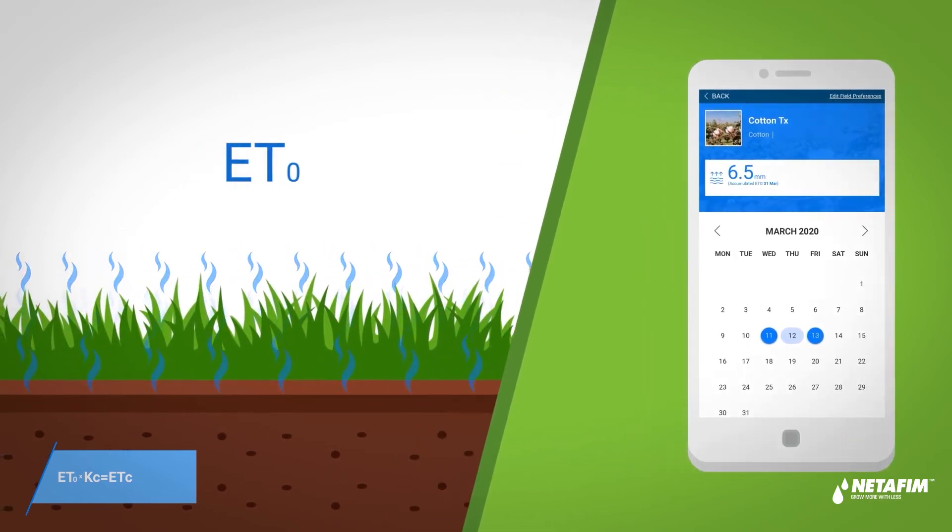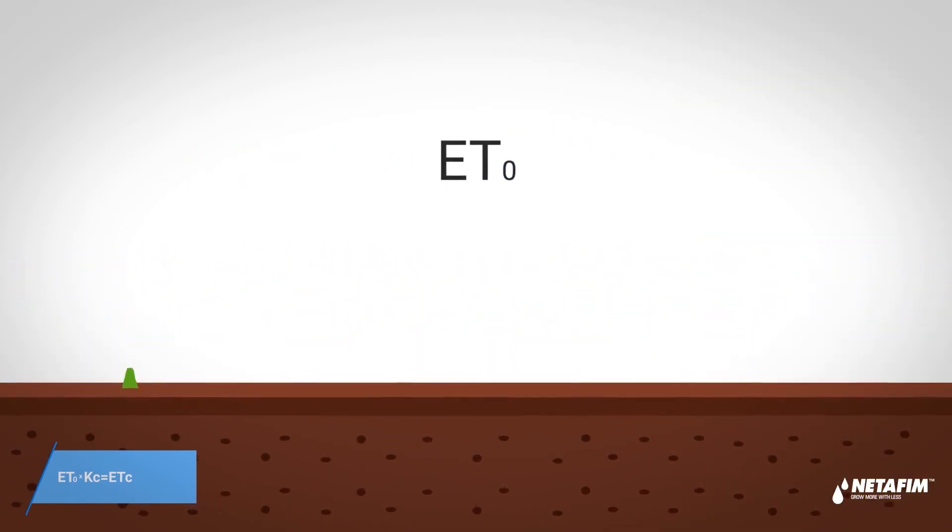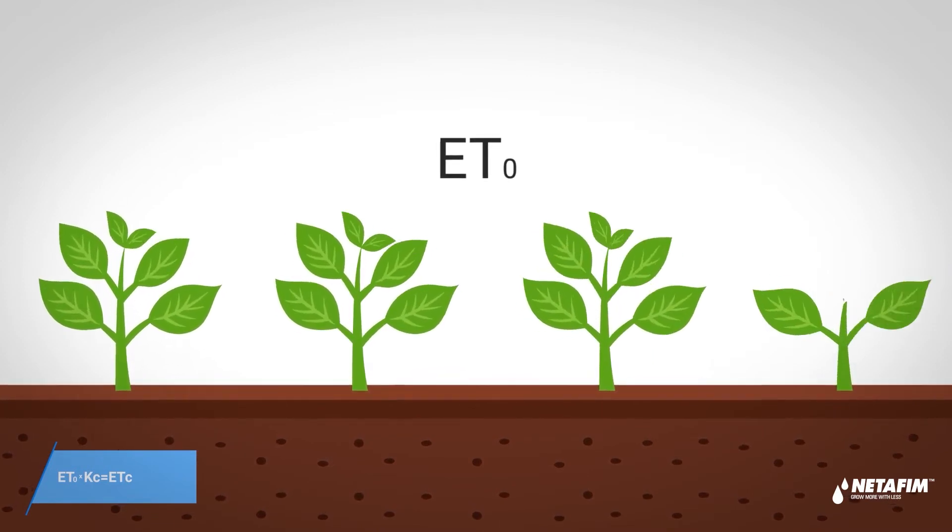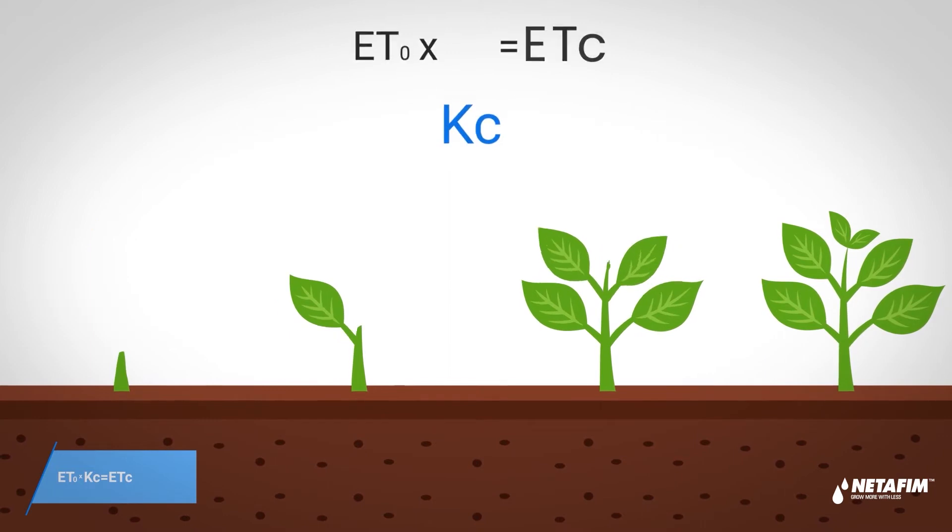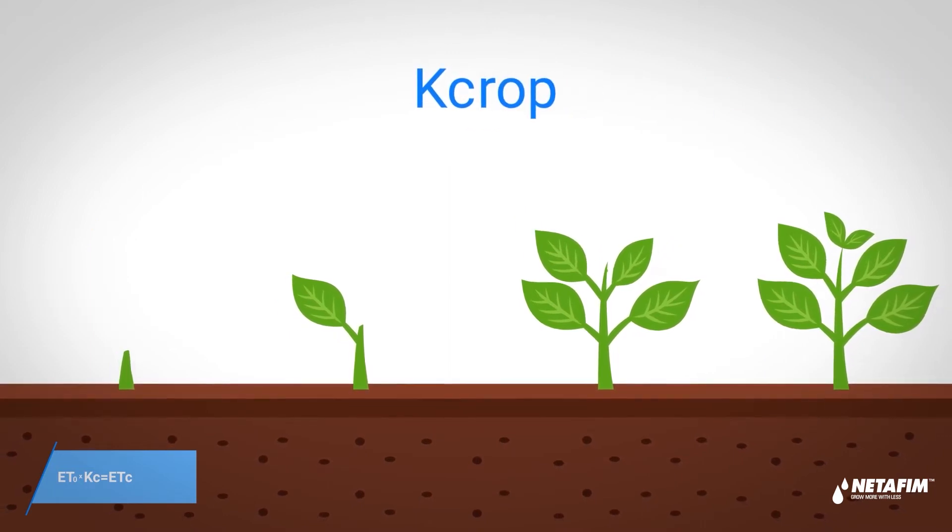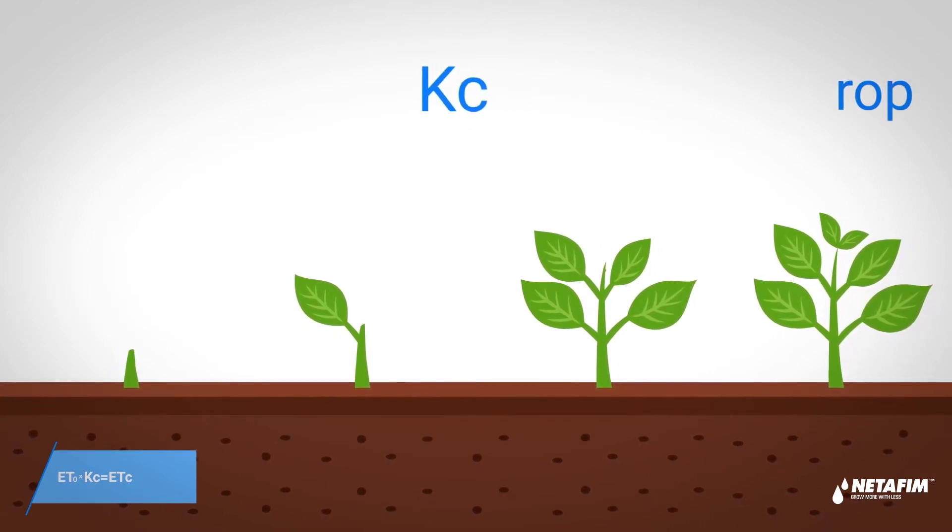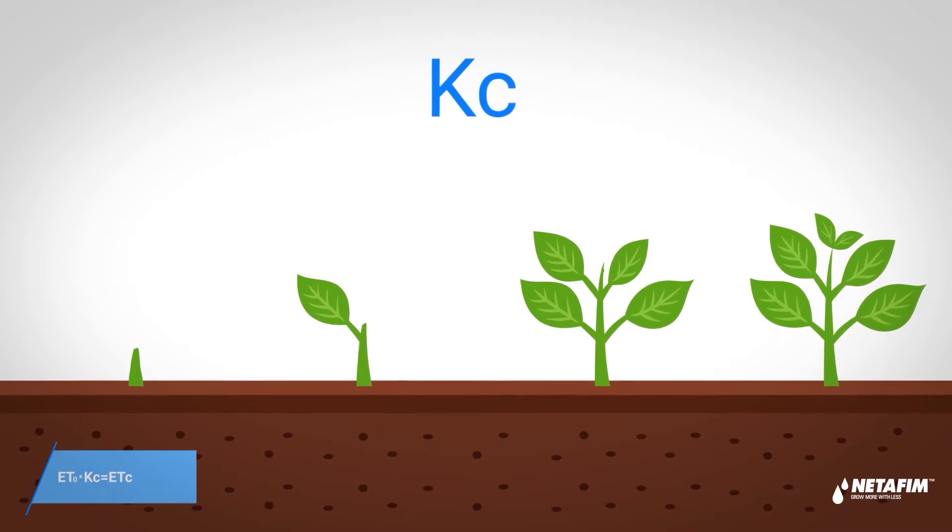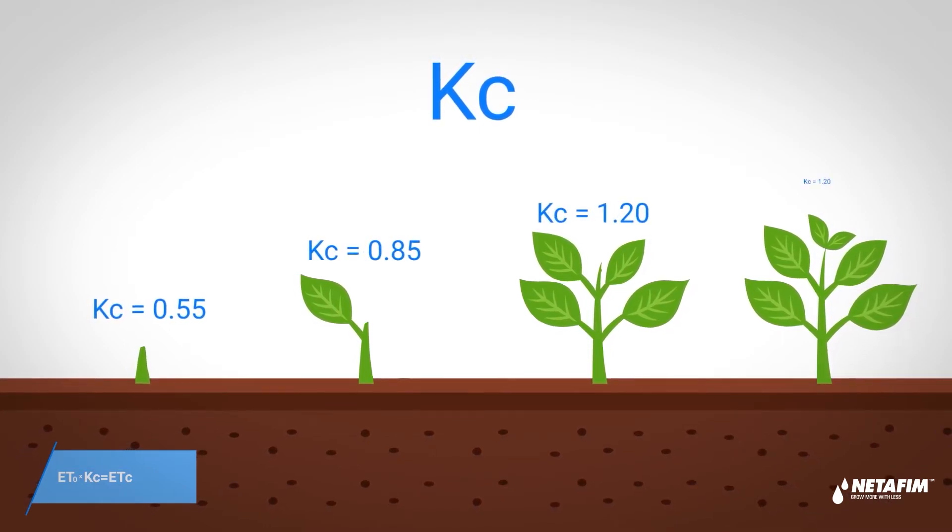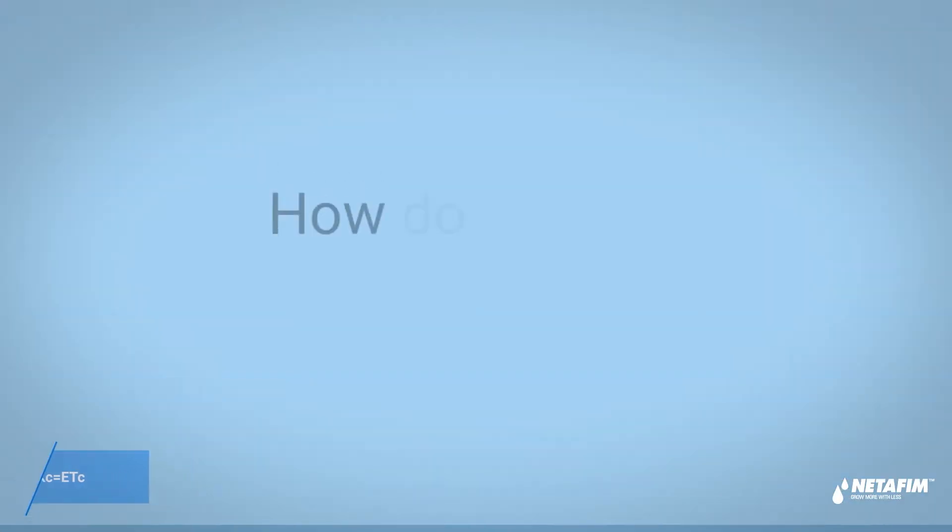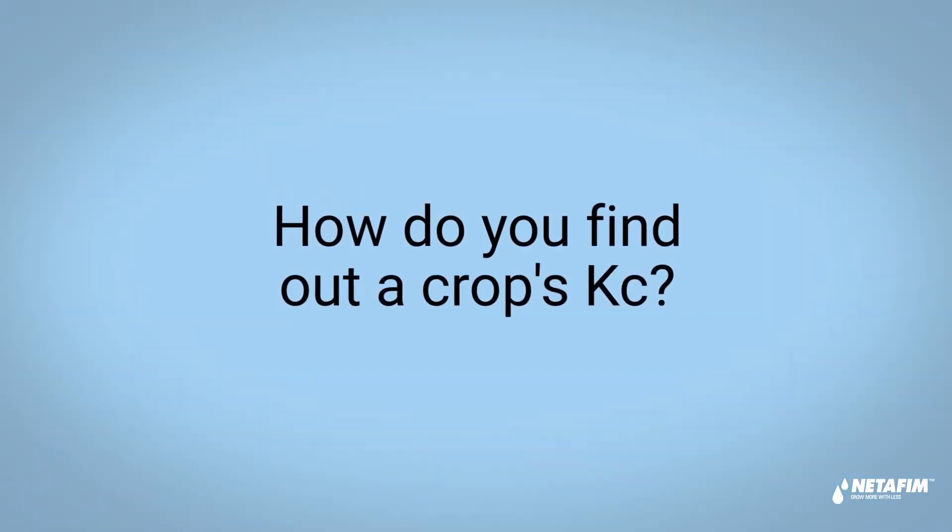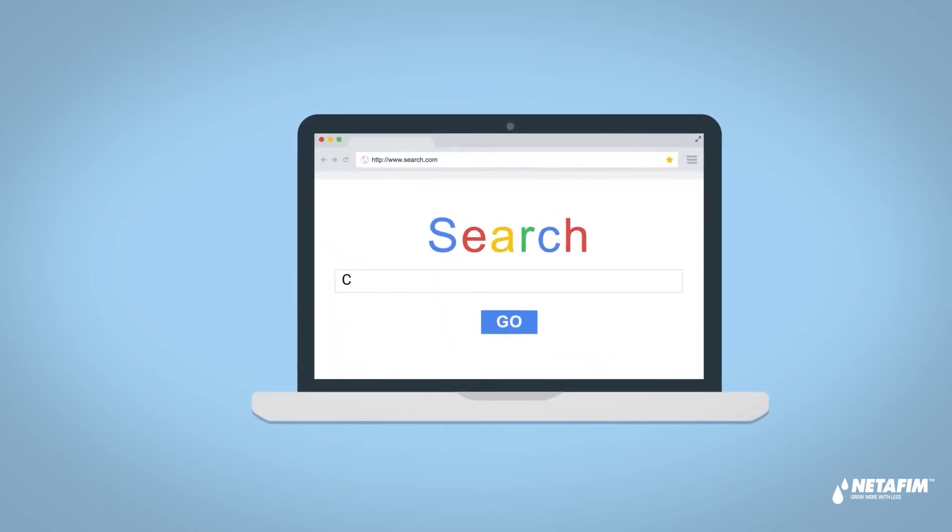So how do you move from a reference grass to your crop in its specific growth stage? Each crop in every growth stage has a factor called KC, the crop factor. The crop factor represents the properties of the crop, so we simply multiply the ETO by the crop factor. How do you find out a crop's KC? Simple - just do a quick internet search, consult the crop literature, or ask an irrigation specialist.